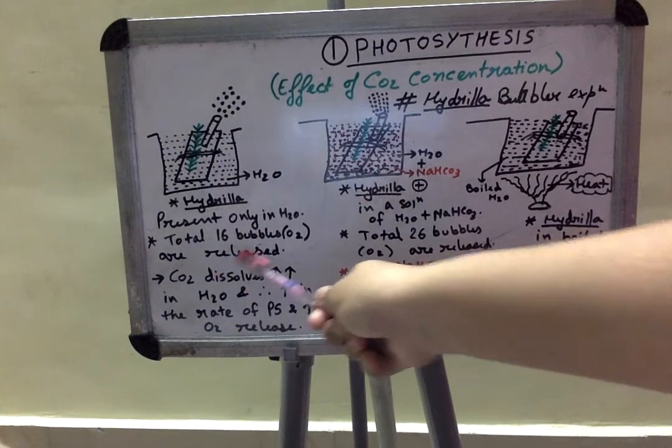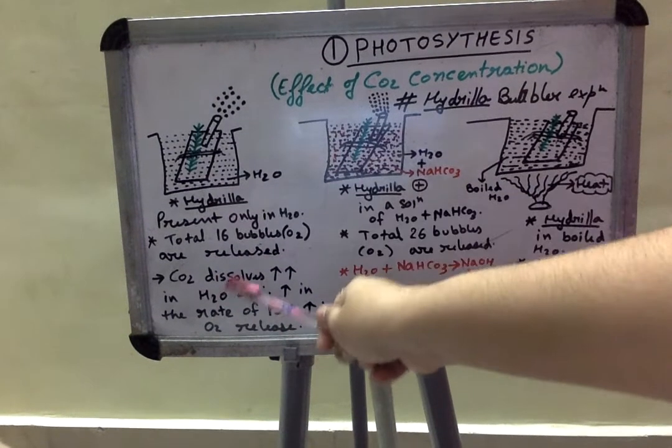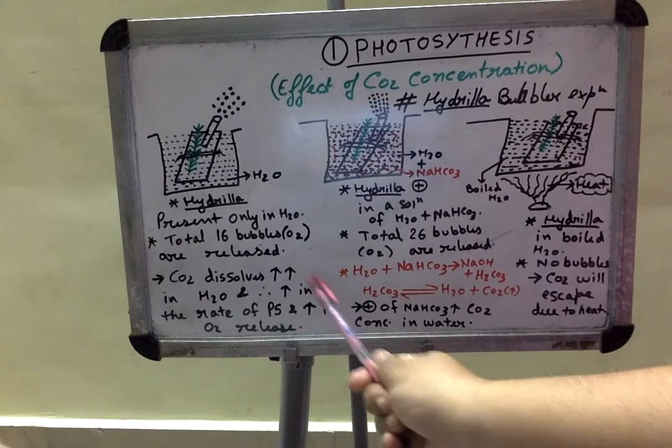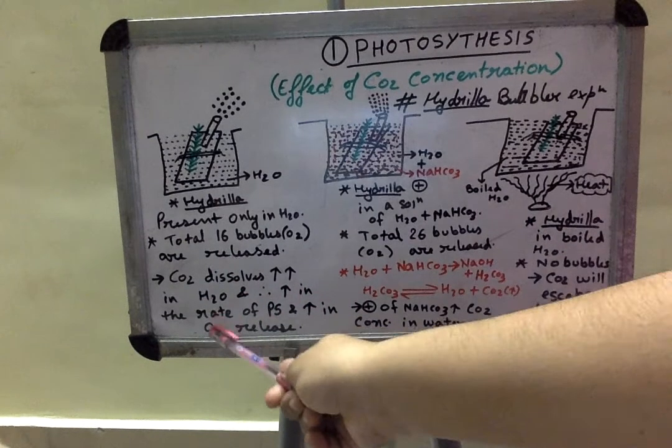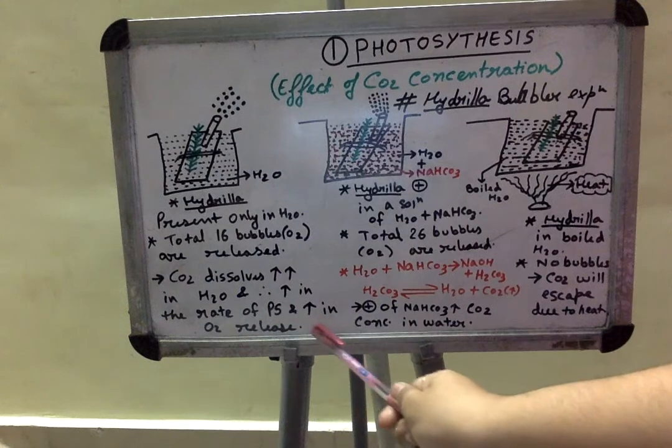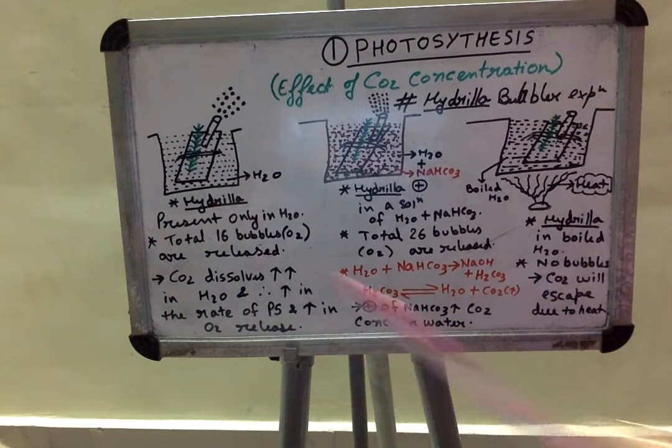So total number of bubbles in our first diagram are 16, because carbon dioxide dissolves to its highest capacity in water and therefore increases the rate of photosynthesis, increasing the oxygen release.